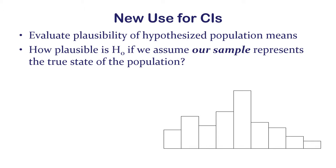We're asking ourselves: how plausible is the null hypothesis if we assume our sample represents the true state of the population? So we reverse that conditional probability. This is a lot closer to what we want to know when we do research — how likely is it that a certain hypothesis is true given what we know from our data.